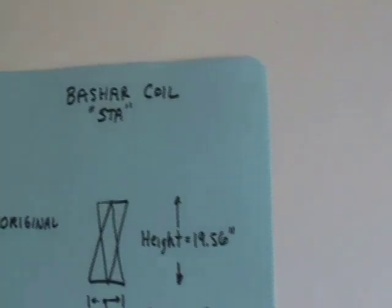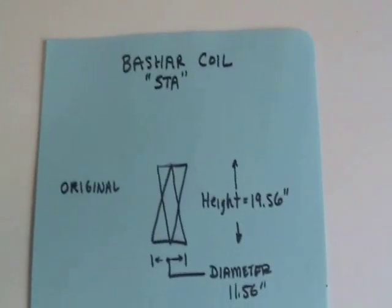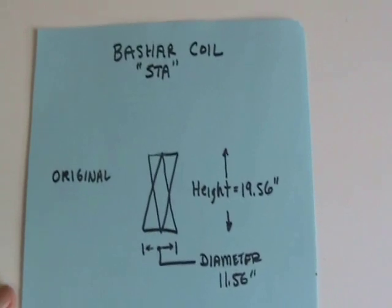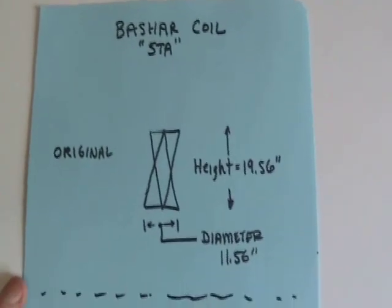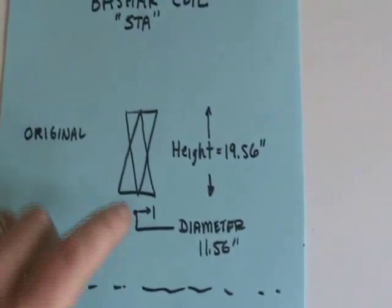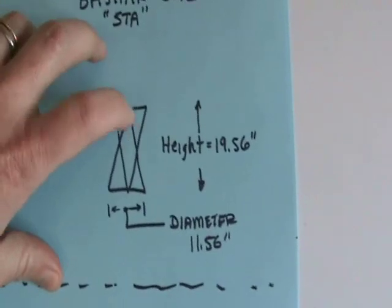Okay, I've got some more Basher spacetime antenna coil notes. I wanted to clarify something in the first video I made. I said that I was a quarter scale of the original plan. The original Basher coil measurements are a coil that has a height of 19.56 inches with a diameter of 11.56 inches.